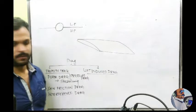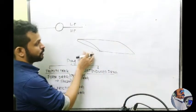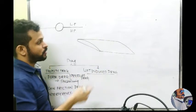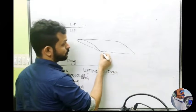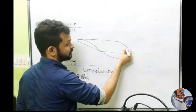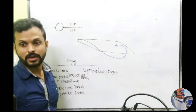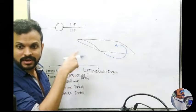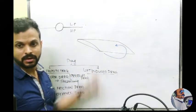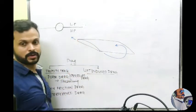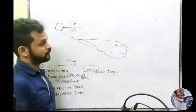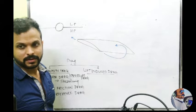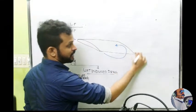Consider a rectangular wing — it doesn't taper, just goes straight. Pressure underneath is higher and pressure above is lower. What the air wants to do is leak from underneath the surface and reach above. Obviously it can't do that directly because the aerofoil is in the way, so the air finds its way out via the trailing edge to reach the upper surface.